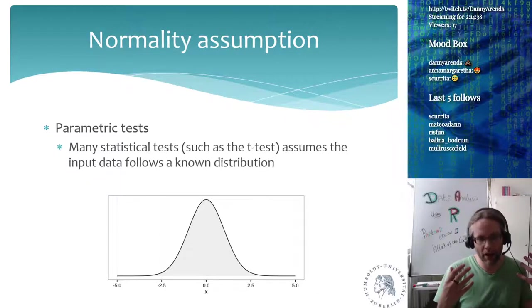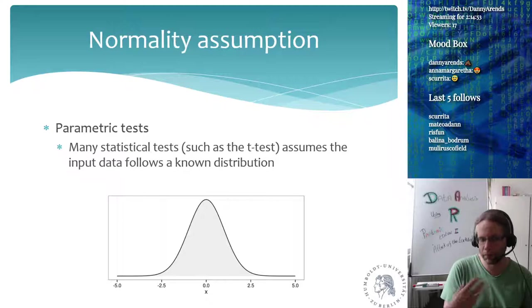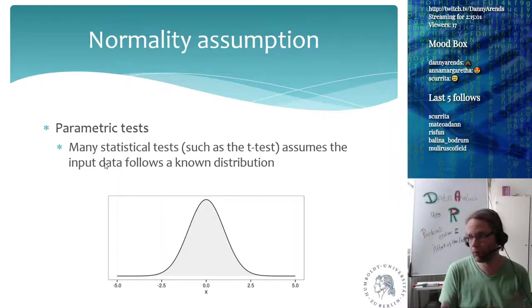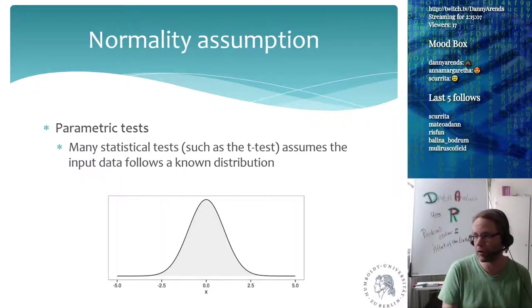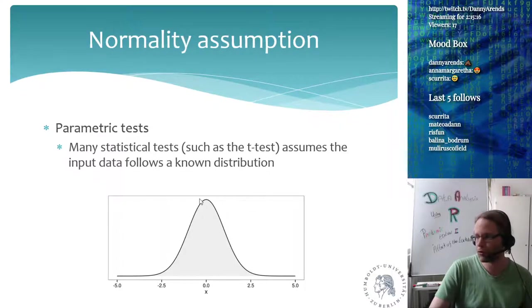Almost all statistical tests have assumptions. The t-test assumes that your data follows a known distribution — these are called parametric tests. If there is a normality assumption in your statistic, it is called a parametric test. The t-test assumes that both groups, when you plot a histogram, follow a normal distribution.